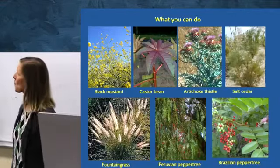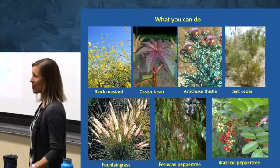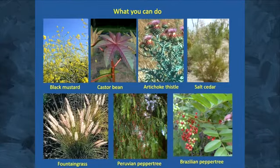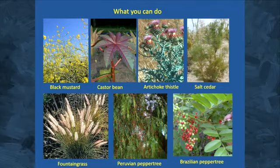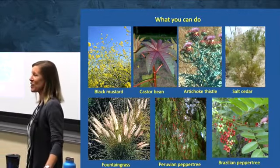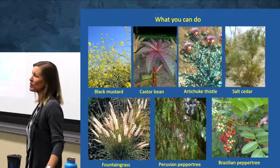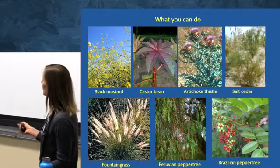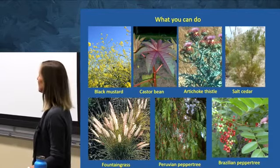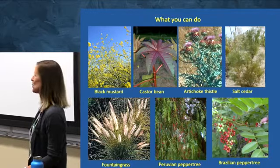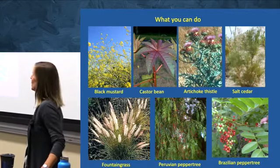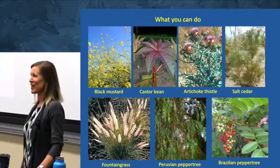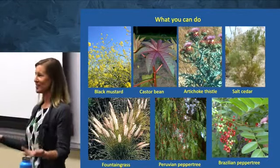I always like to end these general invasion ecology talks by talking about what you can do. I don't really know what the dominant invasive species are in Utah, but these are some of the dominant ones in Southern California. I encourage people, when going out hiking, to be aware of wildland weeds — if you spot a small population of a particularly nasty species like artichoke thistle and tell a ranger, they can often take care of those couple of individuals before they spread. Also be aware of plants you're putting in your yard, and consider native options.